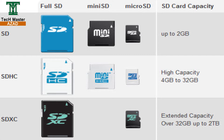SDHC — Secure Digital High Capacity — covers 4GB, 8GB, 16GB, 32GB. SDXC — Secure Digital Extended Capacity — covers capacities from 64GB up to 128GB and beyond, including 30GB increments.